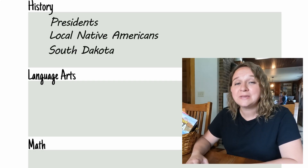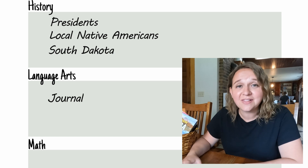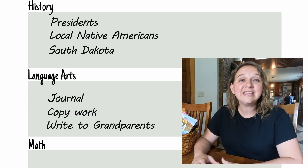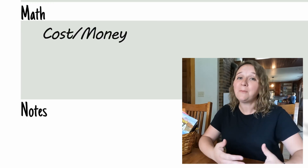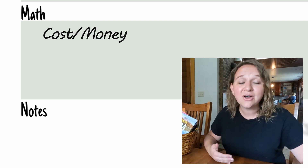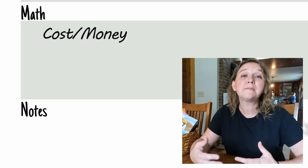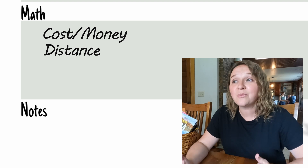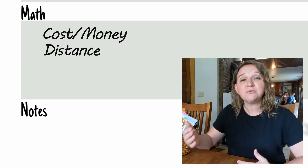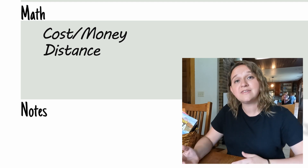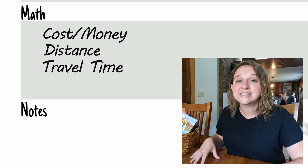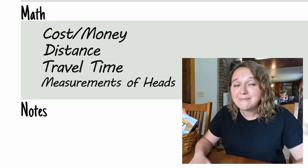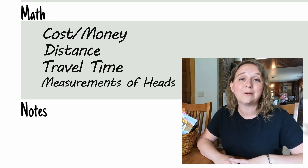As we learn, we can be journaling all of these things and that counts as handwriting. And then we need to use math in figuring out how much money everything's going to cost and that we need to plan to have to take with us. We can figure out what the distance is to Mount Rushmore and then between each of the different things that we want to do. So there's actually a lot of math that we can incorporate as well.